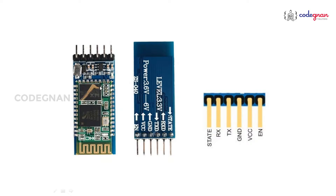It uses radio waves to communicate from one module to another. In daily life we observe Bluetooth in phones, speakers, and headsets. The communication baud rate is between 9600, 38400, and 115200. These baud rates help Bluetooth communicate with other modules wirelessly, and the Bluetooth speed is 1 Mbps for sending and receiving data.